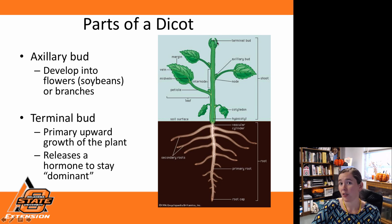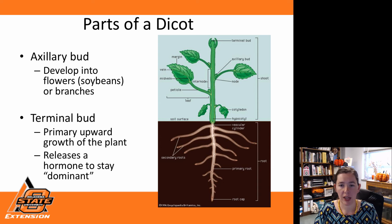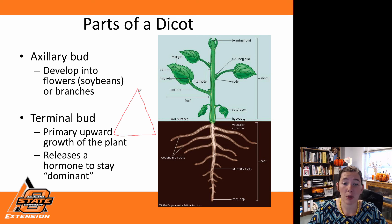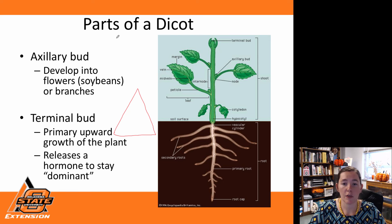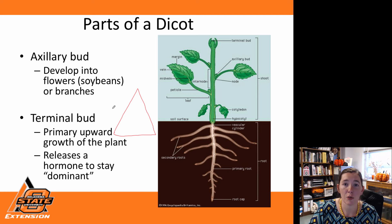Something interesting about our dicots is that our terminal bud has a lot of control over the plant. The terminal bud is actually releasing a hormone over the rest of the plant, telling these axillary buds not to put on extra stem growth or branching. This is referred to as the Christmas tree effect. A Christmas tree has a nice pyramid shape — the terminal bud at the top is releasing a hormone telling the rest of the plant to stay dormant. That's why at the top we have a more tapered shape, and the further from the top, the wider the base.